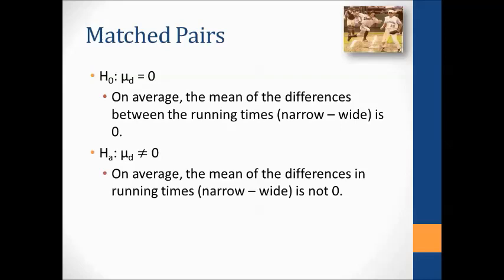With means, we also did a matched pairs example. The first example was base running times: we had a narrow path and a wide path, and the researcher wanted to know which path was faster from home plate to second base on average. Instead of having one group do the narrow path and a different group do the wide path, he had the same group do both paths — this is what makes it a paired test. We look at the difference in times for each individual. The null is that the long-term mean difference in times is zero; the alternative is that it's not zero.